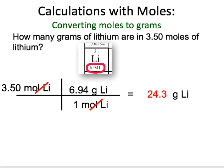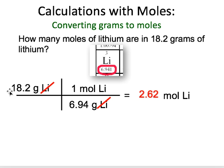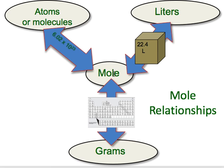Example two: how many moles of lithium are in 18.2 grams of lithium? We start with 18.2 grams and we're trying to get to moles, so this time we flip the conversion factor. We use one mole equals 6.94 grams of lithium — it's just a division. Note that nowhere in this problem does it say the word atoms, so we do not use 6.02 times 10 to the 23rd. We only use that when the problem asks for moles and atoms.